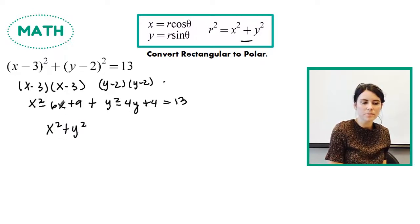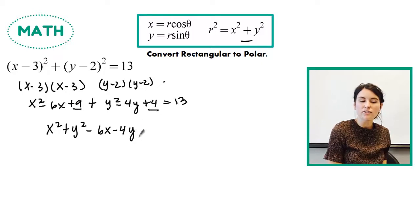So x squared plus y squared minus 6x minus 4y, and then I have 9 and 4. So that's going to make 13 and this is all equal to 13.